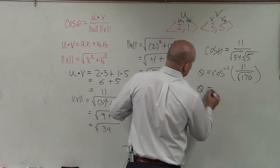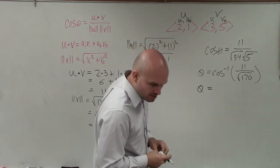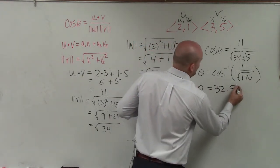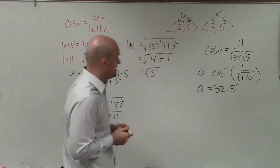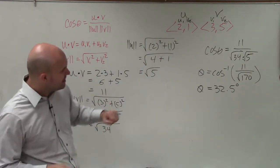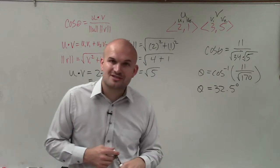So therefore, we'll have theta equals 32.5 degrees. Therefore, there you go, ladies and gentlemen. That is how you determine the angle between your two vectors, u and v. Thanks.